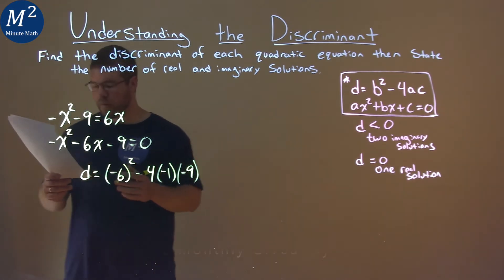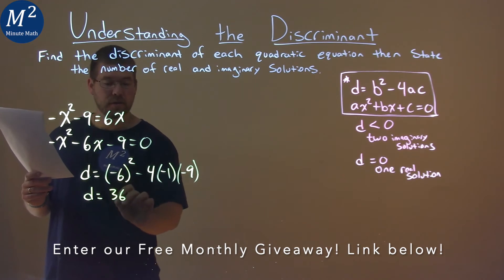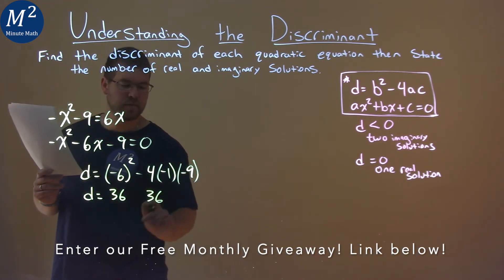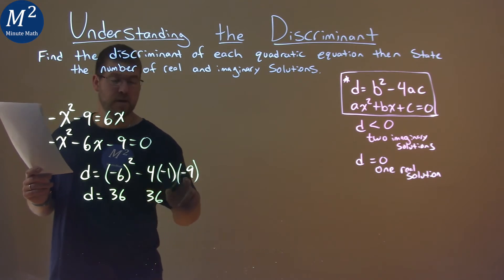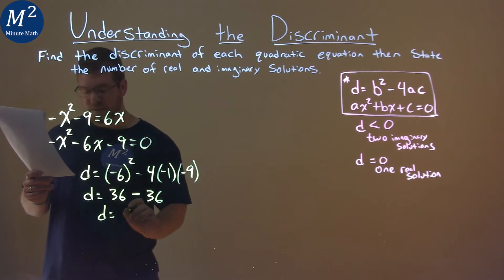And now what we want to do is solve this. Negative 6 squared is a positive 36, and 4 times 1 times 9 is also 36. But we have a negative times a negative times a negative, which is a negative. 36 minus 36 is 0.